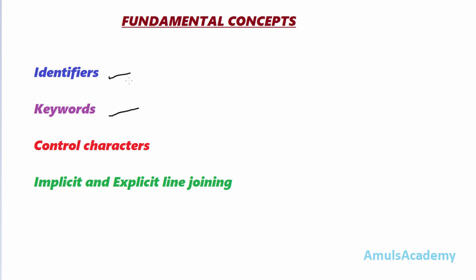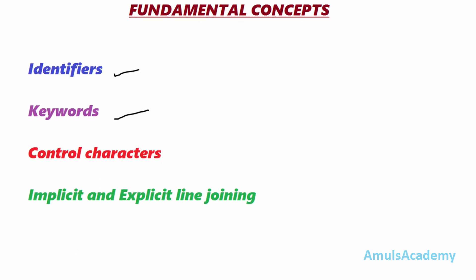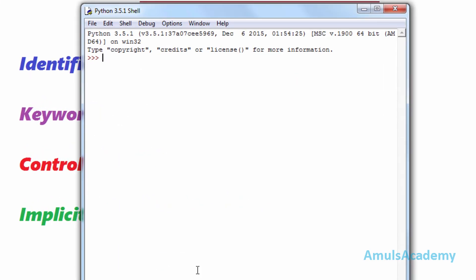digits, and underscores. The first letter of the identifier should be a letter or underscore — it should not start with a digit. Now we'll see a few examples for identifiers. As I said, a variable name is an example of an identifier.